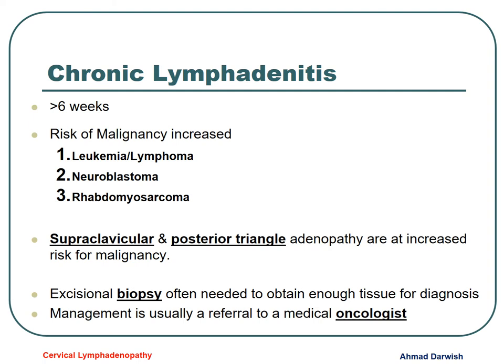Chronic lymphadenitis means lymph nodes persisted for more than six weeks, with increased risk of malignancy including leukemia, lymphoma, neuroblastoma, and others. When the lymph nodes are supraclavicular or in the posterior triangle, the risk of malignancy is increased, excisional biopsies should be done, and the patient should be referred to an oncologist.